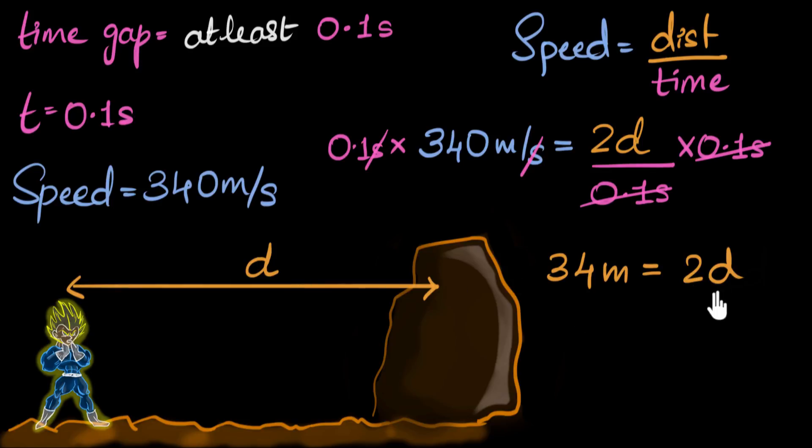Now to calculate what d is, I want to get rid of this 2. So to do that, I'm going to divide now by 2 on both sides. And so the 2 cancels, and what we are left with is 34 by 2, that is 17 meters. That equals d. And there's our answer.